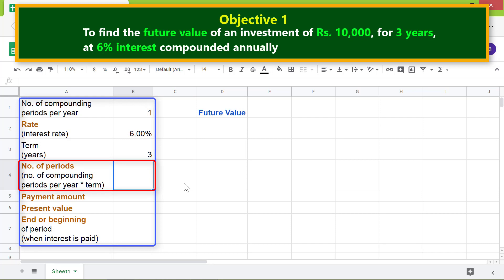For the term, type 3 because the investment is for 3 years. For the number of payment periods, we have to multiply the number of compounding periods per year by term. So type equal to and click this cell, type the multiplication operator star, click this cell, and press enter.